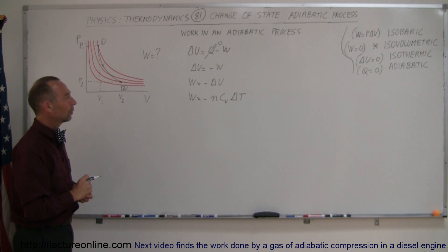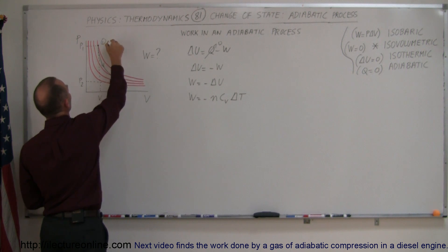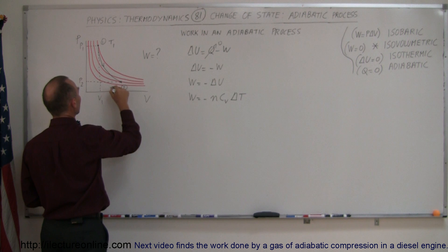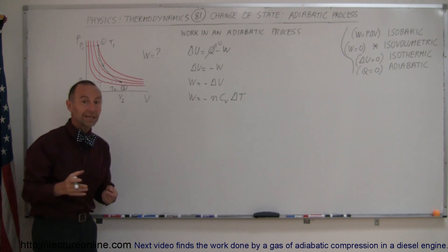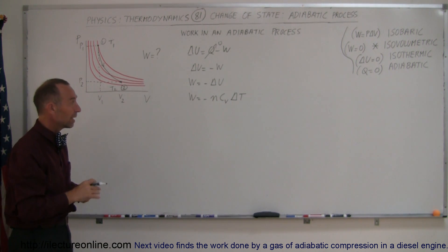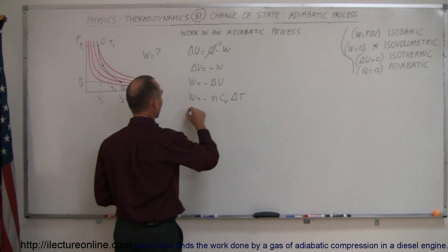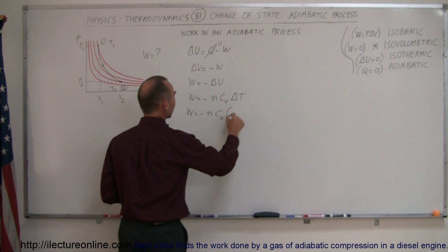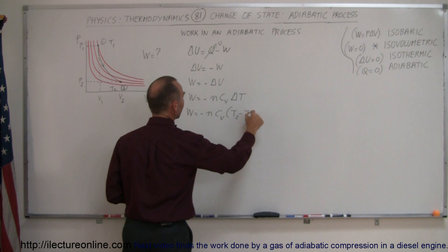Let's say we start over here where the temperature is T1, and we end up over there where the temperature is T2. The change would be final minus initial, or T2 minus T1. So we can write the work done as equal to minus N C_V times (T2 minus T1).